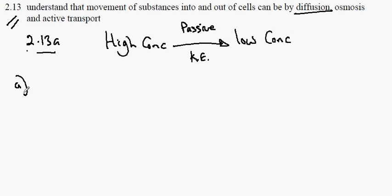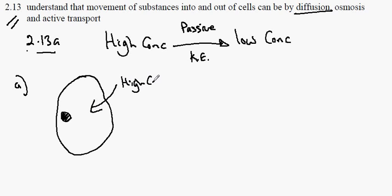In cells, an example of diffusion could be seen as the movement of oxygen into a respiring animal cell where the oxygen will be in high concentration around the cell and there will be a low concentration of oxygen in the cell.